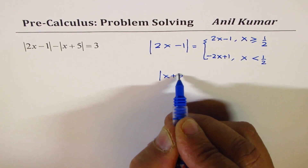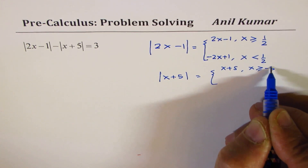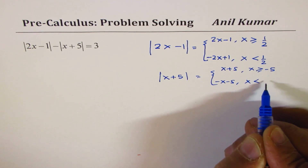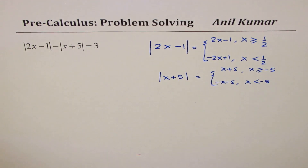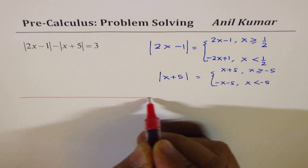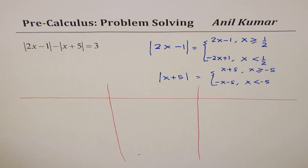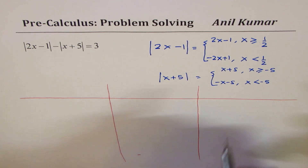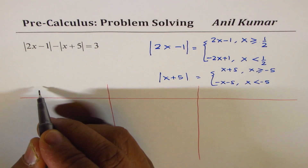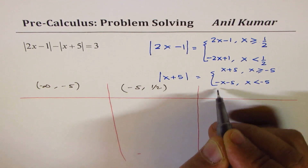Similarly, |x + 5| equals x + 5 when x ≥ −5, and −(x + 5) when x < −5. Use greater than or equal to for the positive case — that will help you get the questions right. So we again have three intervals: from −∞ to −5, from −5 to 1/2, and from 1/2 to +∞. When working with two absolute functions, you expect three intervals.